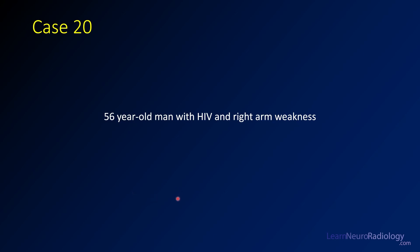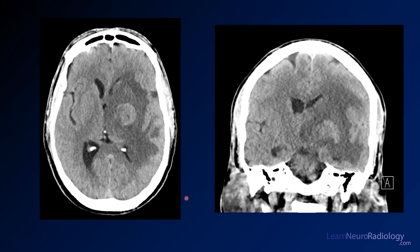Today's case is a 56-year-old man who's got HIV and right arm weakness. Hopefully these images are going to give us a little idea about why he's got arm weakness. I've got a couple images from a CT of the head, non-contrast — axial and coronal. Hopefully by now you're finding abnormalities pretty easily.